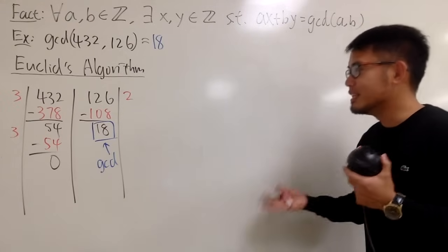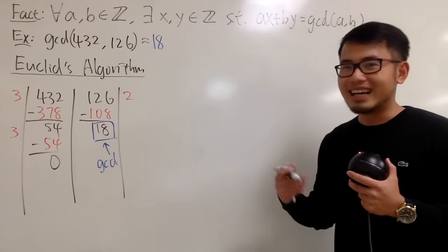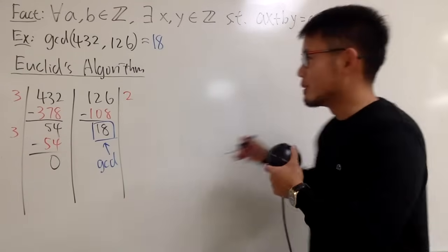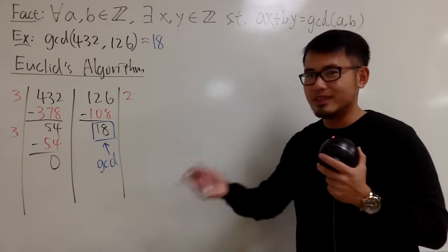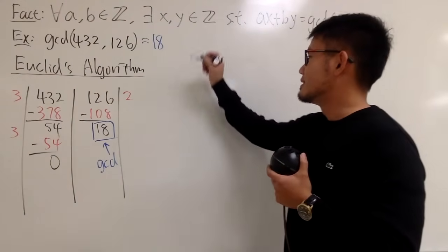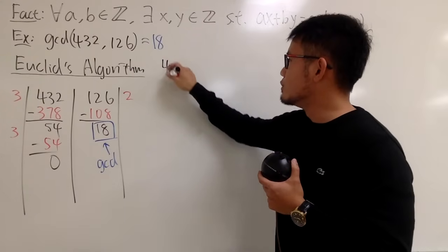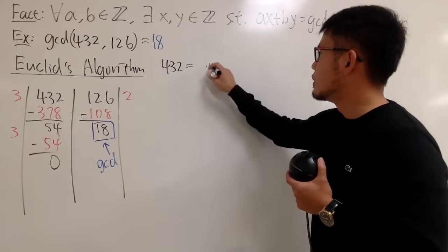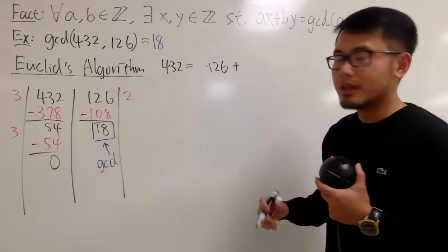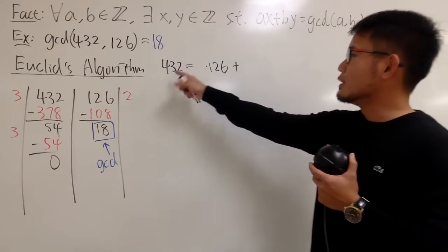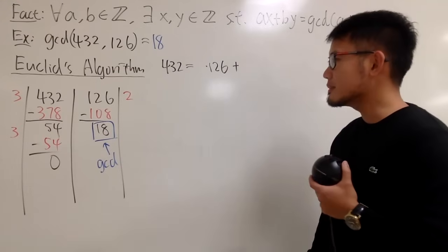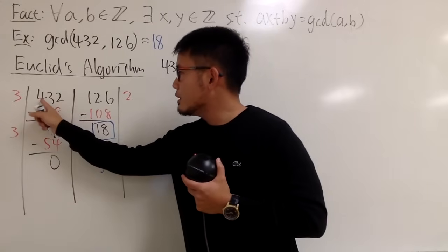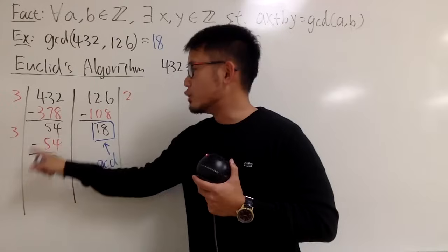Let me show you how the textbooks present it. You still do long division, using the remainders. Start with the bigger number, 432, and write it as some number times 126 plus some remainder. We already did the work: 126 goes into 432 three times with remainder 54. So we write 432 equals 3 times 126 plus 54.